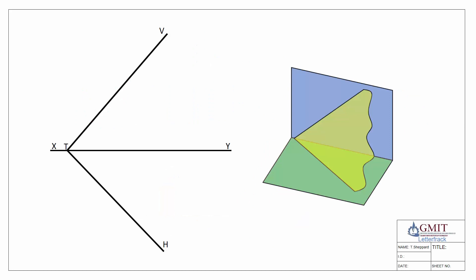We'll begin by explaining the idea of the horizontal sections method. Here we have a setup with the vertical trace and the horizontal trace of an oblique plane, shown in elevation and plan view. Over here we have the 3D of the same thing — here's our oblique plane, here's our vertical trace where the plane crosses the vertical plane, and here's the horizontal trace where our oblique plane crosses the horizontal plane.